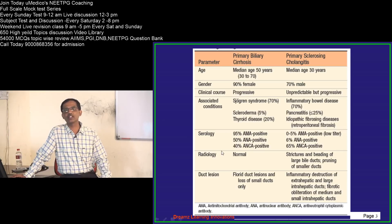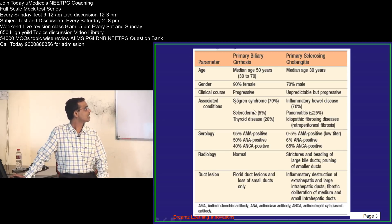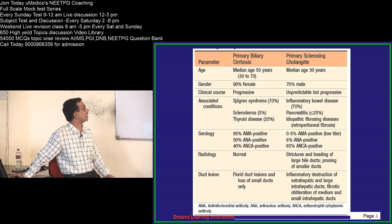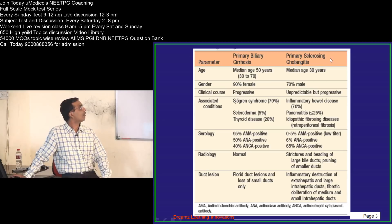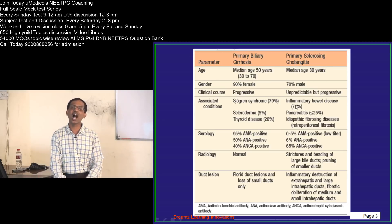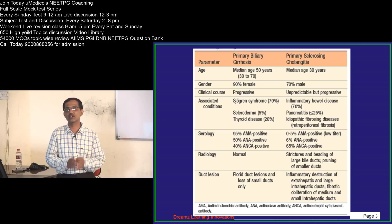Associated conditions: PBC is associated with other autoimmune diseases, most importantly Sjögren's syndrome, scleroderma, and thyroid disease — specifically Hashimoto thyroiditis and Graves disease. Whereas PSC, primary sclerosing cholangitis, is associated with IBD, inflammatory bowel disease, in 70% of cases — a very strong association. So any patient of sclerosing cholangitis should be screened for Crohn's disease or ulcerative colitis.